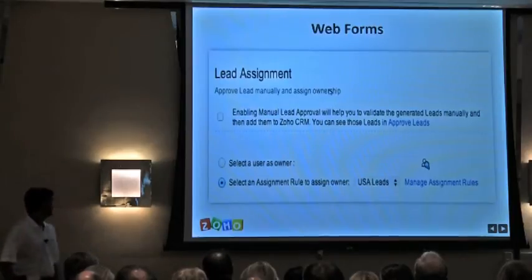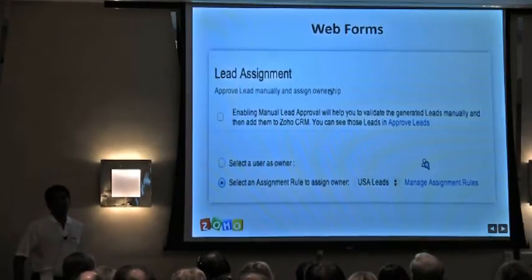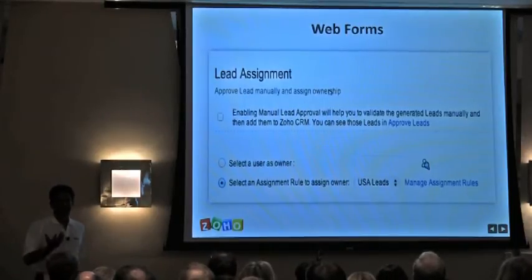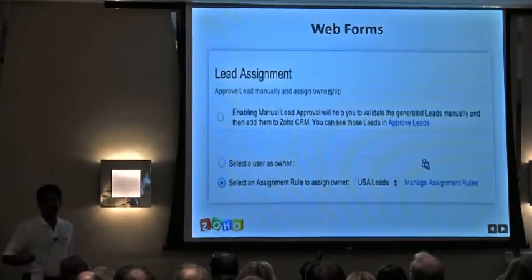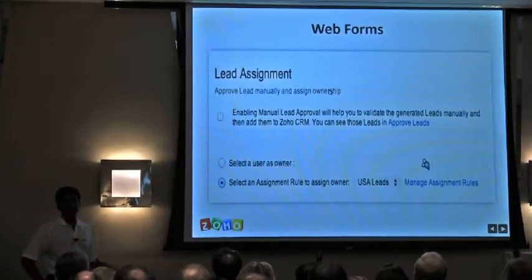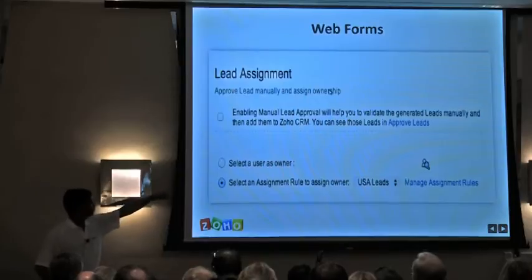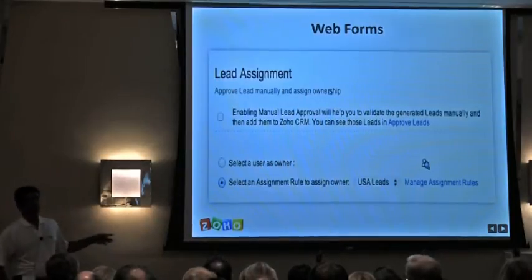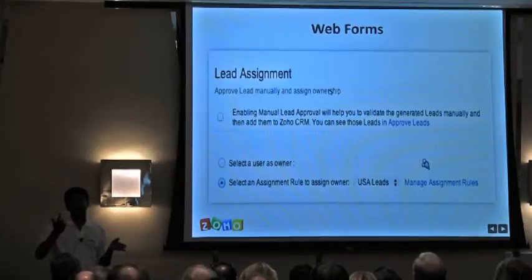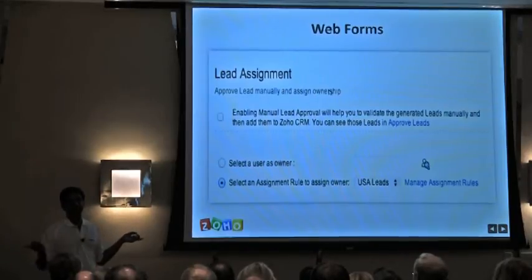Next comes the lead assignment step, and there's also a lead approval option. For example, if you're hosting a form on your website, people might fill in junk information like A, B, C and submit. If you enable the lead approval process, leads submitted through the form go to an 'approve leads' section first. The administrator or designated person can review them daily, approve the genuine leads so they enter the system, and delete the rest.